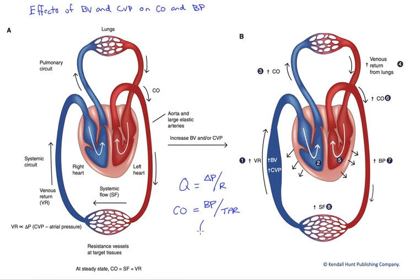Now, if we rearrange this to solve for blood pressure, we get blood pressure equals cardiac output times total peripheral resistance.